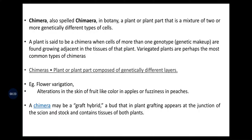Let us see the theoretical definition. This is also spelled as Chimera. In botany, a plant or plant part that is a mixture of two or more genetically different types of cells. In the second definition, a plant is said to be Chimera when cells of more than one genotype — that is, the genetic makeup — are found growing adjacent in the tissue of that plant. Variegated plants are perhaps the most common types of Chimeras.